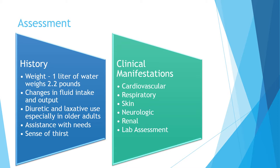Weight loss over half a pound per day is considered a fluid loss. No single lab test result confirms or rules out dehydration; it is determined by laboratory findings along with clinical manifestations. Laboratory findings with dehydration are consistent with increased levels of hemoglobin, hematocrit, serum osmolarity, glucose, protein, blood urea nitrogen, and various electrolytes, because more water is lost while other substances remain. This increases the osmolarity or concentration of the blood — known as hemoconcentration.